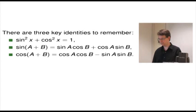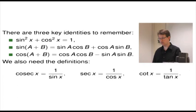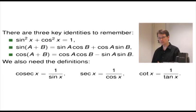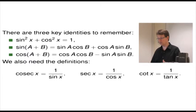We also need the basic definitions. Cosec is 1 over sine x, sec x is 1 over cos x, and cot x is 1 over tan x. Some people find these hard to remember. The way I remember them is that cot and tan both have a t in them, so they go together. The hard pair is cosec and sec — which one's which. I always remember this by noting that cosec starts with 'co' and cosine starts with 'co', and those are the ones which don't match. So cosec goes with sine, and sec goes with cosine.